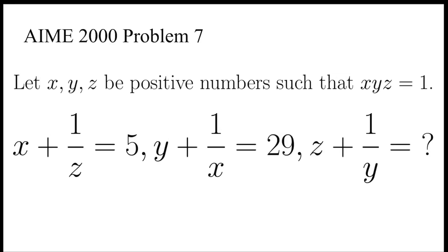This is a problem from the AIMD. x, y, z are positive numbers such that xyz equals 1. It's given that x plus 1 over z equals 5, and y plus 1 over x equals 29. Find the value of z plus 1 over y.